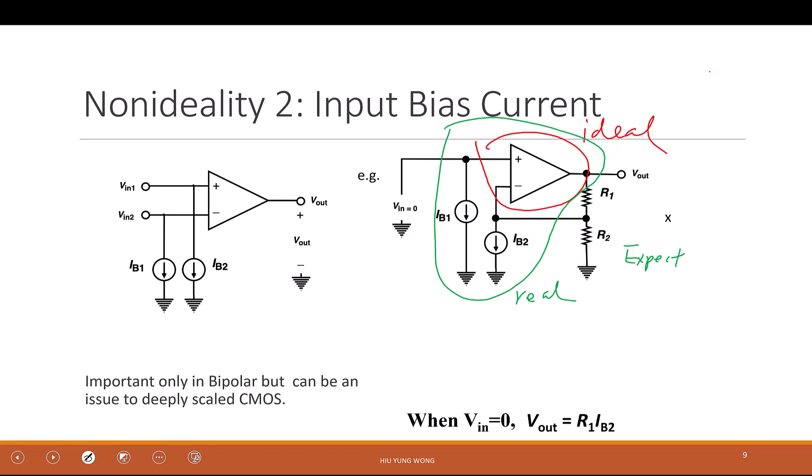We expect V_out equal to zero when V_in equals zero. But because of this biasing current — actually the leakage current at the gate — that is how we model it. Just like when we talked about offset voltage and placed a voltage source V_OS there, now in order to model the leakage at the gate, I place a current source here.